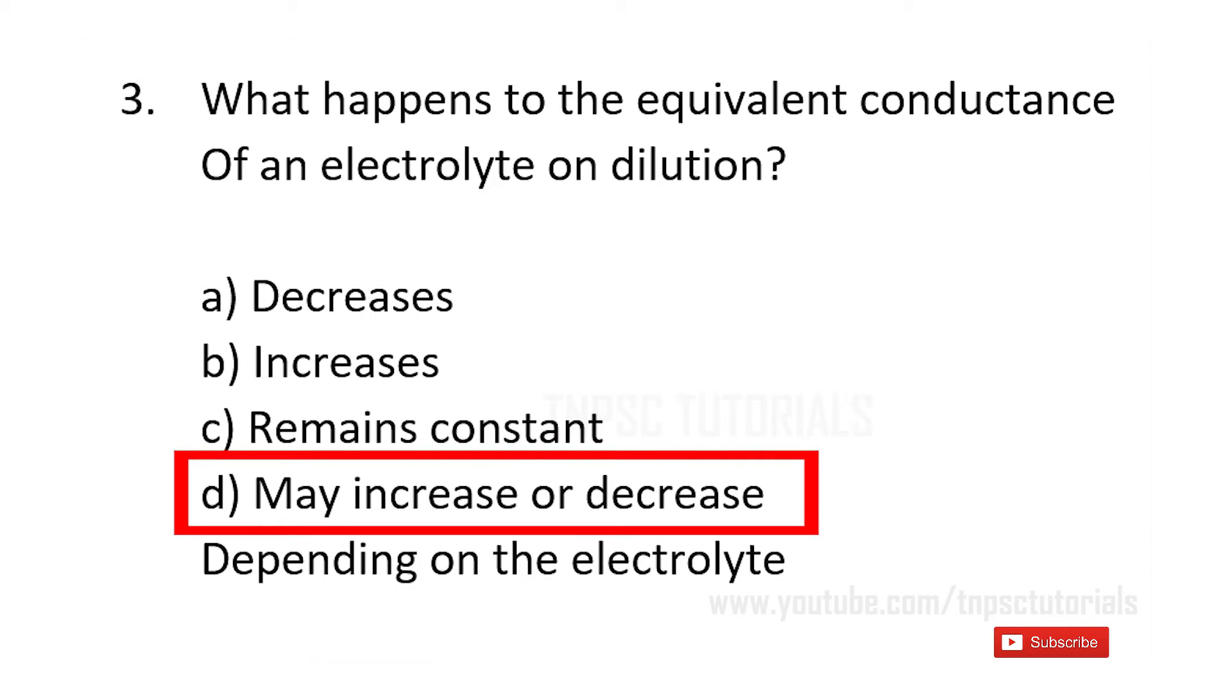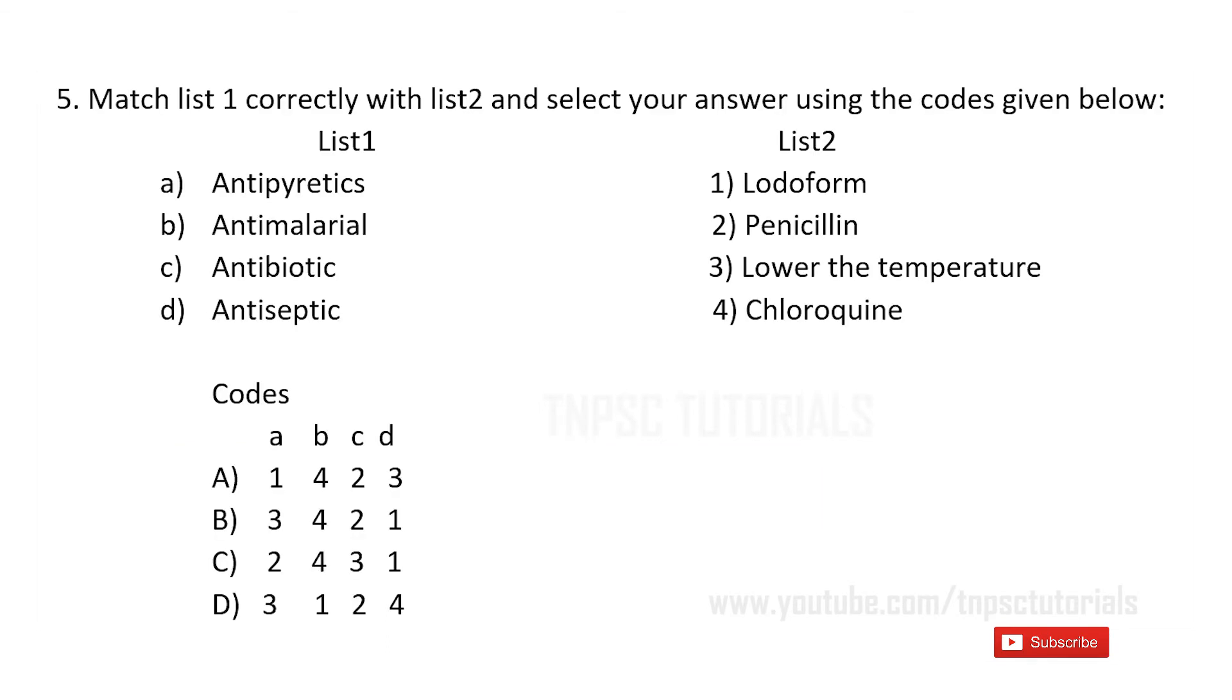Fifth one: match list one correctly with list two and select your answer using the codes given below. List one: a) antipyretics, b) anti-malarial, c) antibiotic, d) antiseptic. List two: 1) chloroform, 2) penicillin, 3) lower the temperature, 4) chloroquine. And the codes are given below. The answer is b) 3, 4, 2, 1. That is, antipyretics lower the temperature, anti-malarial is chloroquine, antibiotic is penicillin, antiseptic is iodoform.